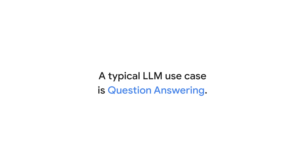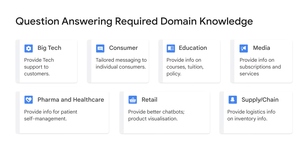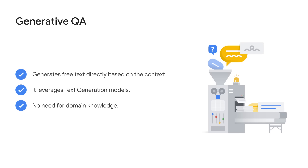Let's take a look at an example of a text generation use case. Question answering, or QA, is a subfield of natural language processing that deals with the task of automatically answering questions posed in natural language. QA systems are typically trained on a large amount of text and code, and they are able to answer a wide range of questions including factual, definitional, and opinion-based questions. The key here is that you need domain knowledge to develop these question answering models — for example, for customer IT support, healthcare, or supply chain. Using generative QA, the model generates free text directly based on the context. There is no need for domain knowledge.